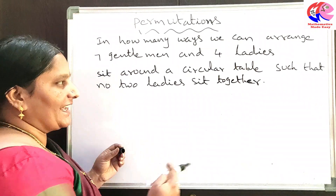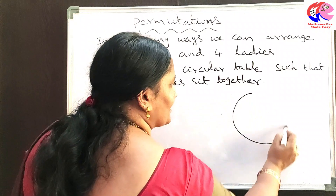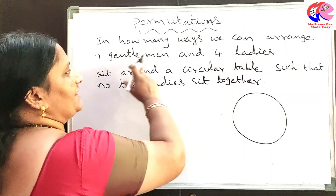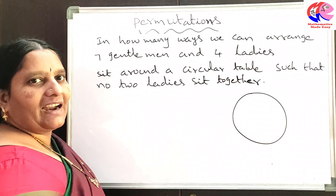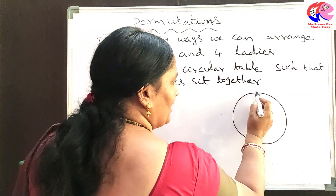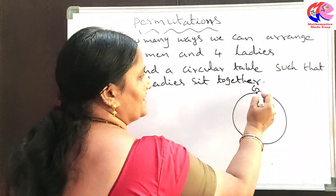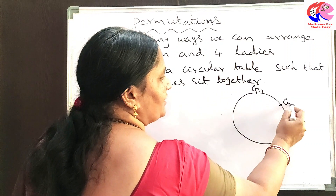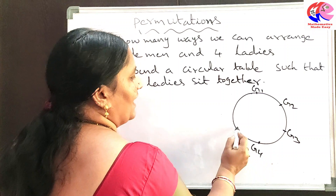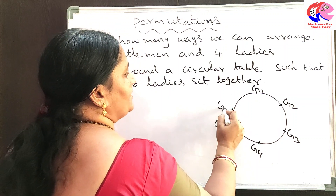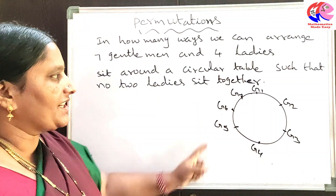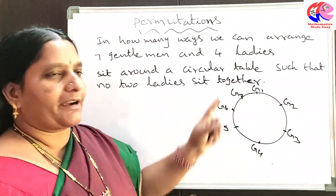First, let us arrange 7 gentlemen. Let us take this as the circular table. Around this circular table we are going to arrange 7 gentlemen and 4 ladies. So we place G1, G2, G3, G4, G5, G6, and G7 around the table.